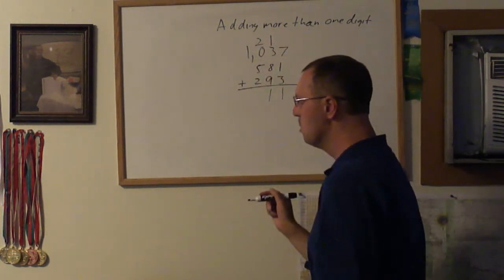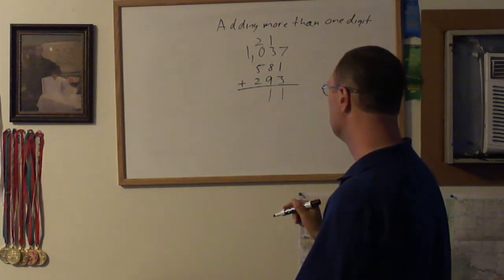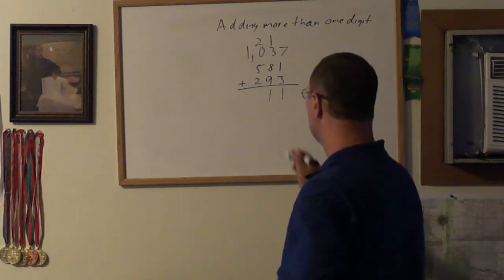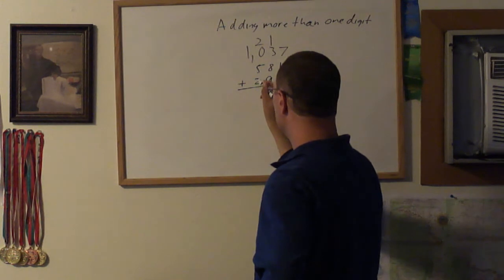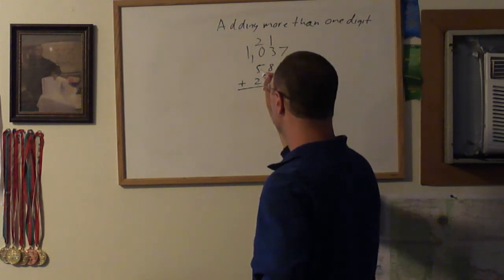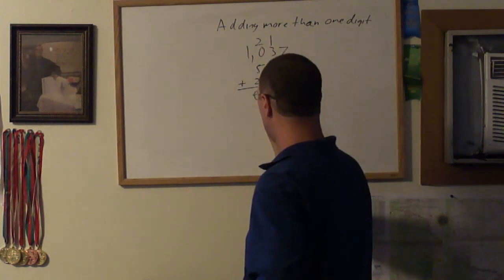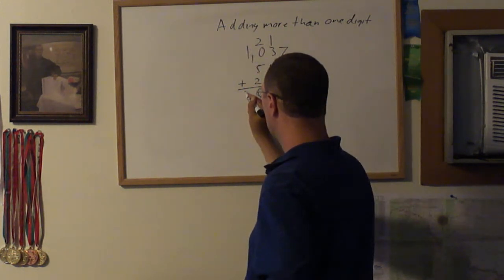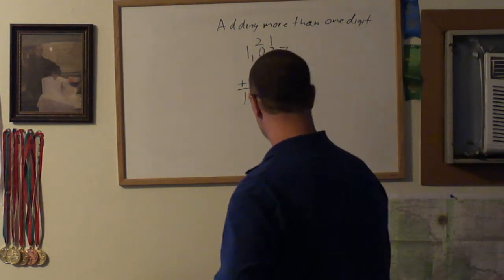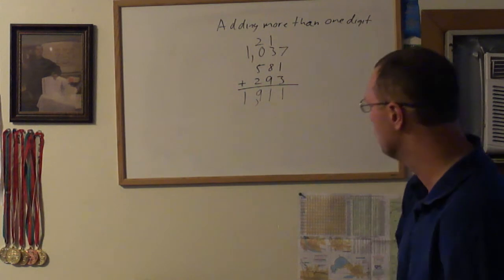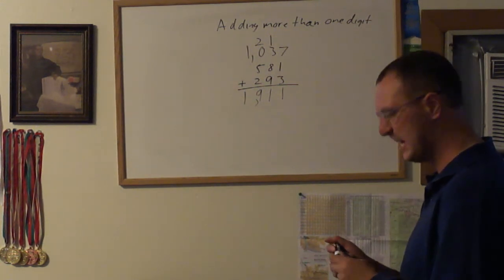Carry the 2 to the hundreds place. 5 plus 2 equals 7, plus 2 equals 9. And nothing carries. Add the 1, and we got 1,911.